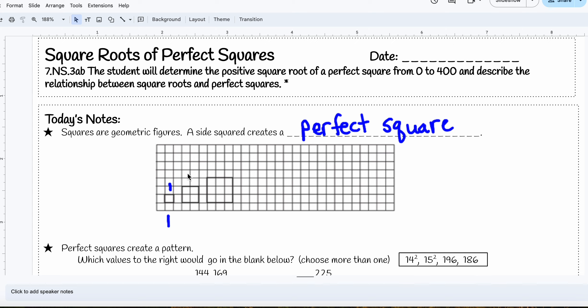The length of this side is two, and therefore the area would be four. And here we have a length of three, and the area would be nine.